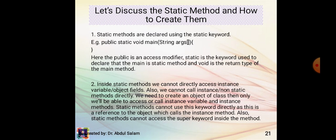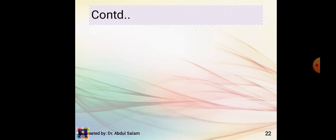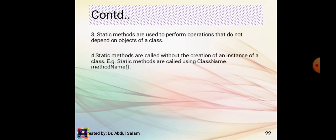Static methods cannot use the this keyword directly, as this is a reference to the object which calls instance methods. Static methods also cannot access the super keyword. Static methods are used to perform operations that do not depend on objects of the class and are called without creating an instance — for example, using ClassName.methodName().